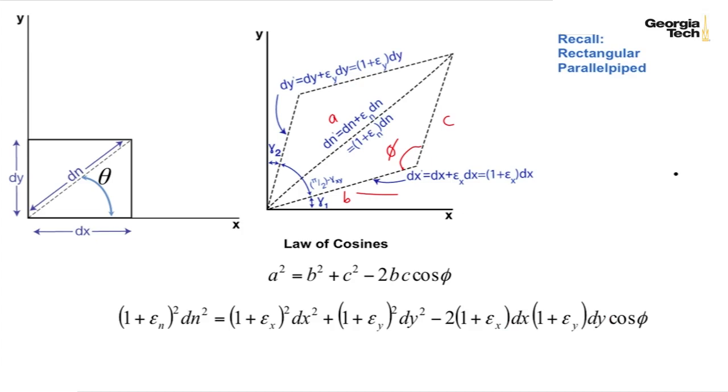Okay, let's recall now a rectangular parallel piped. Here's an x and y coordinate. Here's a rectangular parallel piped. And you'll recall by geometry that this angle, and let's just call this generically alpha 1 and this alpha 2, they have to add up to pi because the entire, all the angles have to add up to 2 pi. And so we have alpha 1 plus alpha 2 equals pi.